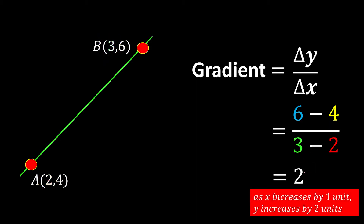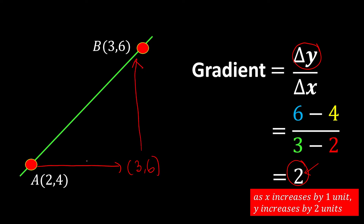This means that if x increases by 1 unit, y will increase by 2 units. As we can see here, when the x value increases from 2 to 3, the y value increases by 2 — that is, 4 plus 2 equals 6.